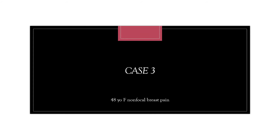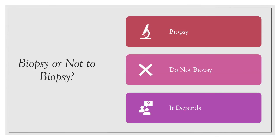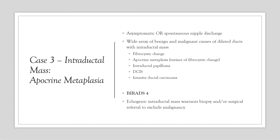Case 3: a 48-year-old female with non-focal breast pain. Sonography shows an echogenic mass within a focally dilated duct without internal vascularity. We biopsied this intraductal mass. Intraductal masses can present in asymptomatic patients or with spontaneous nipple discharge. The differential includes both benign and malignant causes: fibrocystic change, apocrine metaplasia (which this was), intraductal papilloma, DCIS, or invasive ductal carcinoma. Because of these possibilities, it is assessed as BIRADS 4 and should be considered for biopsy or surgical referral for excision.